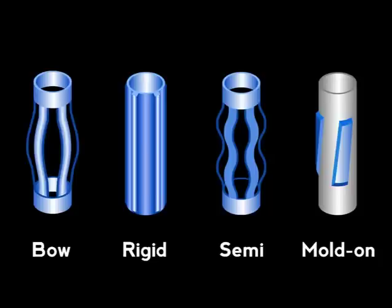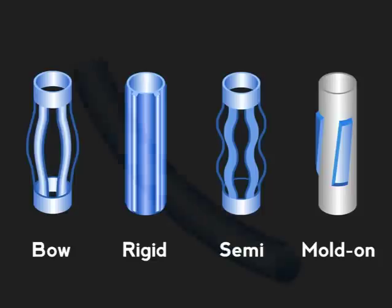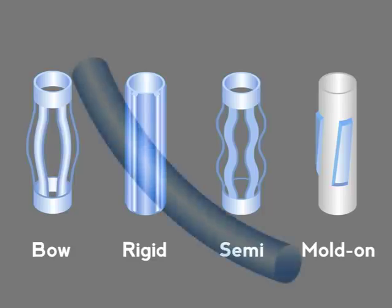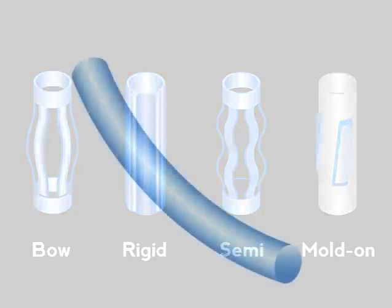These are four types of centralizers. Each type has its own pros and cons. Regardless of the centralizer type, we need to study the force balance for a casing segment like this.